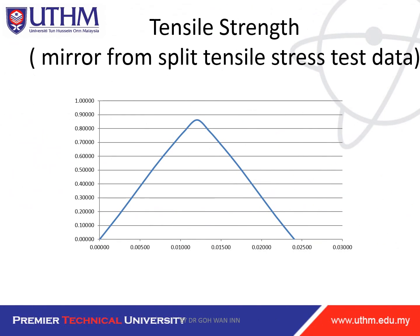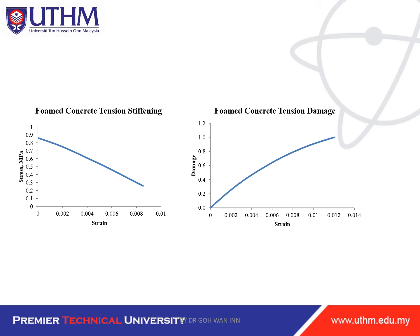For tensile strength, the procedure is similar. From the split tensile stress test, you mirror the data from the post-ultimate portion to obtain the softening branch. After mirroring, remove the first part and keep only from the ultimate load to failure. You use the same formula as for compression: d_t = 1 − E/E_original, where E_original is the initial elastic modulus and E is the slope at each point. This gives you the concrete tension damage.